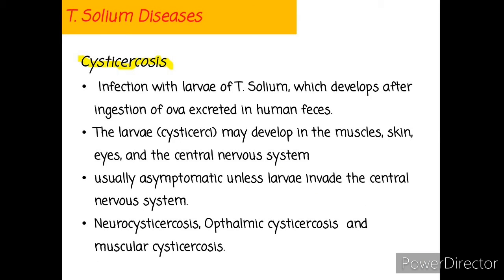The diseases caused by Taenia solium are cysticercosis and taeniasis. Humans can be infected due to poor hygiene or ingesting contaminated food or water. Cysticercosis is an infection with the larvae of Taenia solium, which develops after ingestion of ova excreted in human feces. The larvae may develop in the muscles, skin, eyes, and central nervous system.